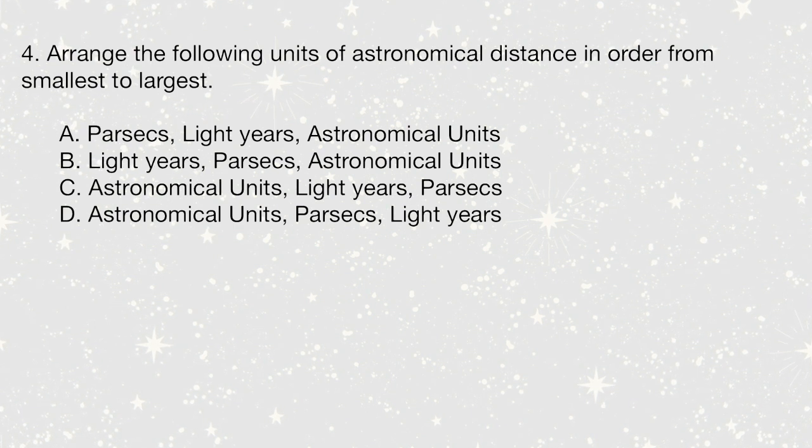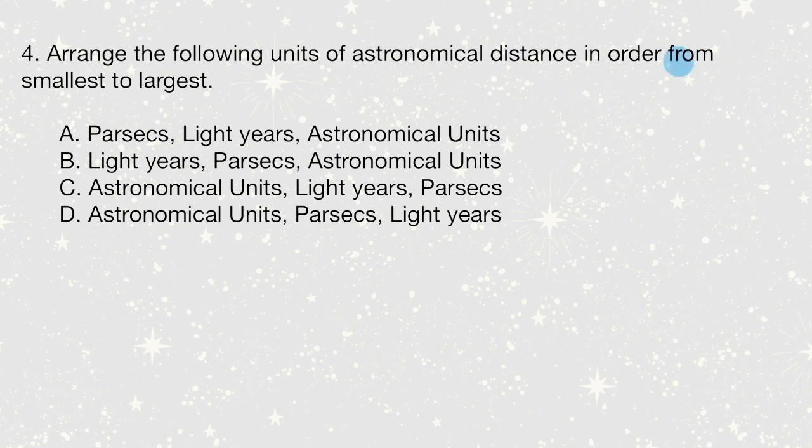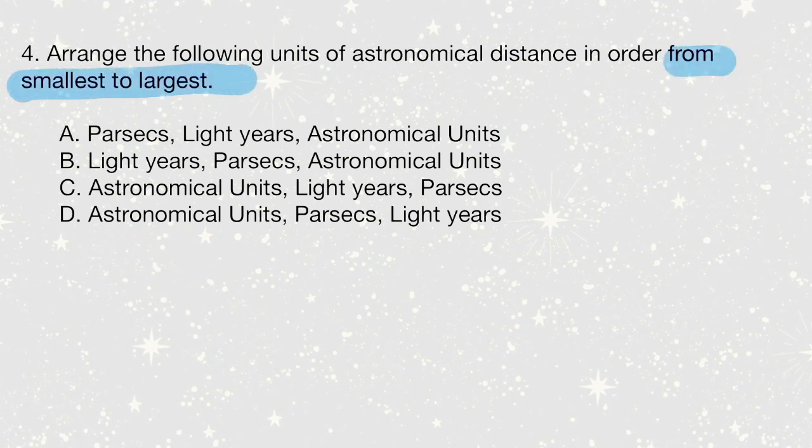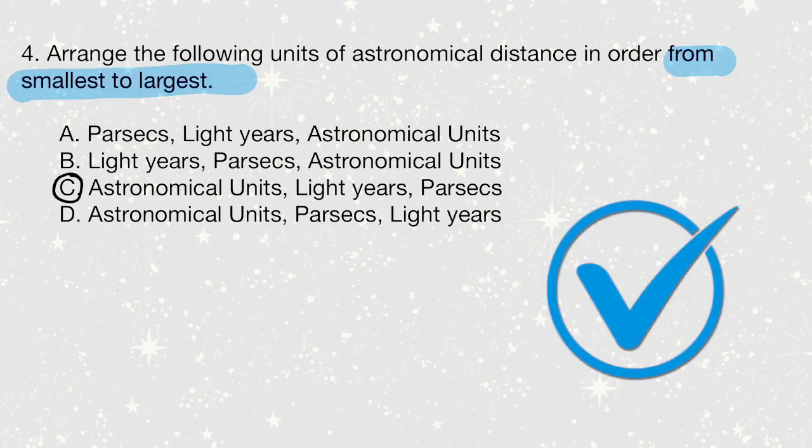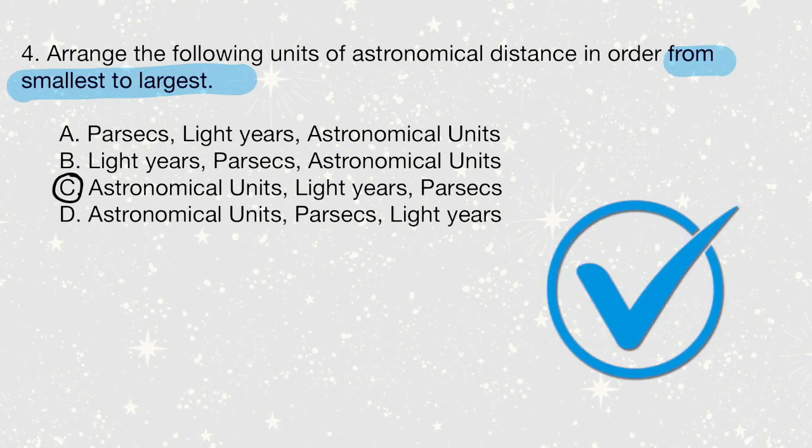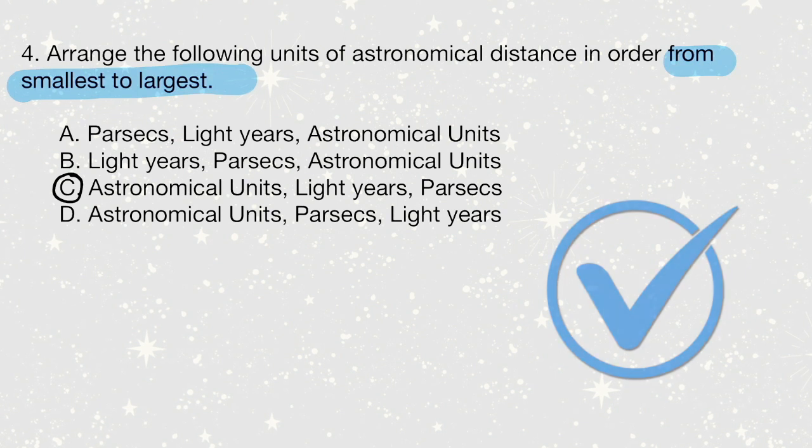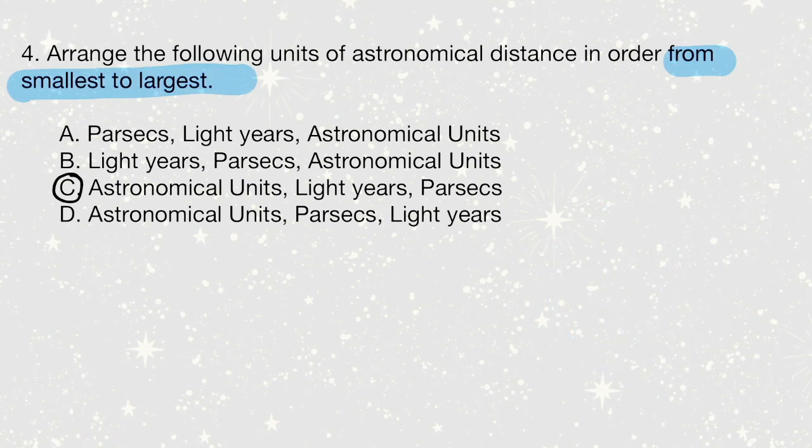So once again, we want to look at the question here. We are going from smallest to largest. And so it turns out that answer C is the correct answer. Astronomical units is the smallest and parsecs is the largest.